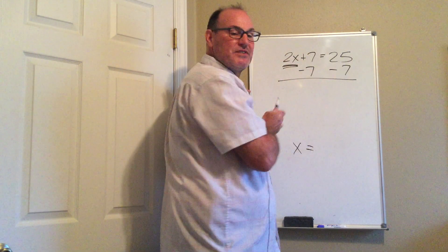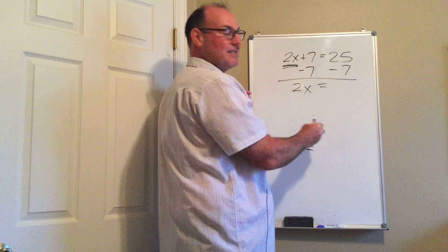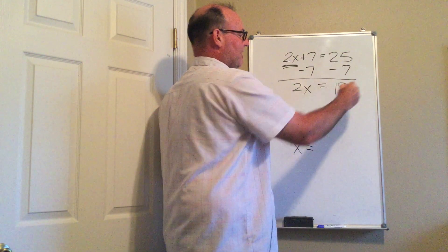Now I've done it to both sides. My equation's in balance. I have 2x on this side, the equal sign stays in the middle, and I have 18 on the other side.